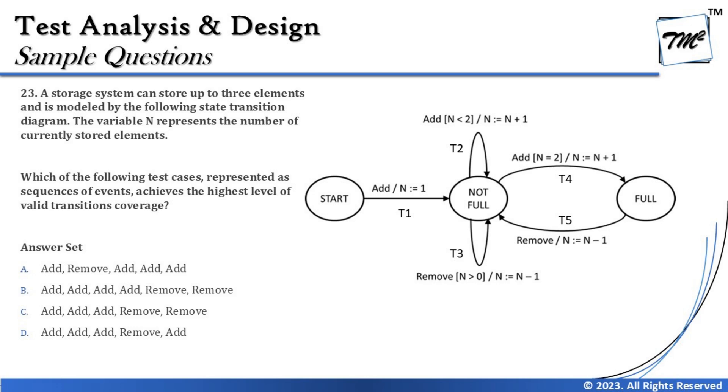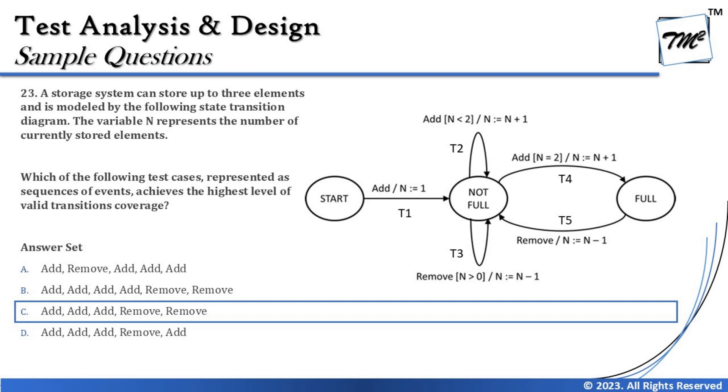The option that achieves maximum coverage is option C — add, add, add, remove, remove — giving the right answer for question 23. By looking at some questions, we may feel they are very complex, but it's us who make things complicated. If you have a little patience and simplify things in your own way — just like labeling transitions t1 through t5 — you can solve it. That's all for this tutorial. Feel free to comment below. Keep learning, keep exploring, keep understanding the context. Thanks for watching!